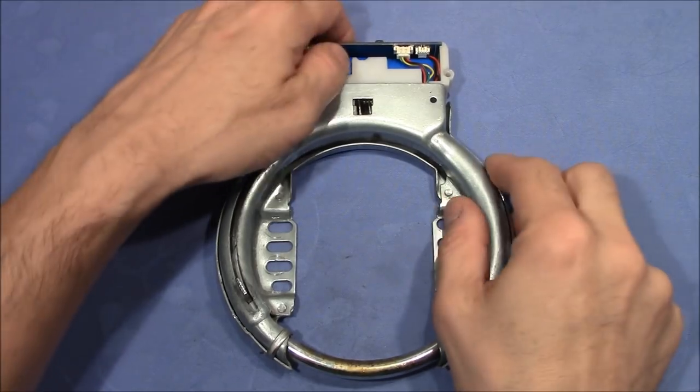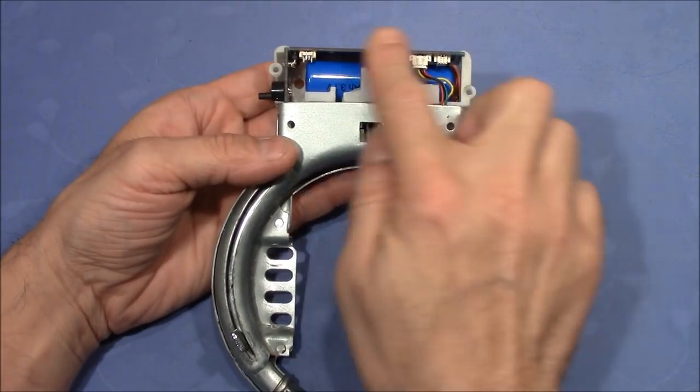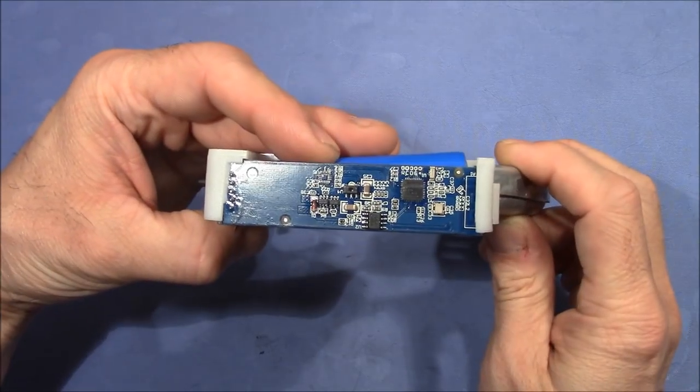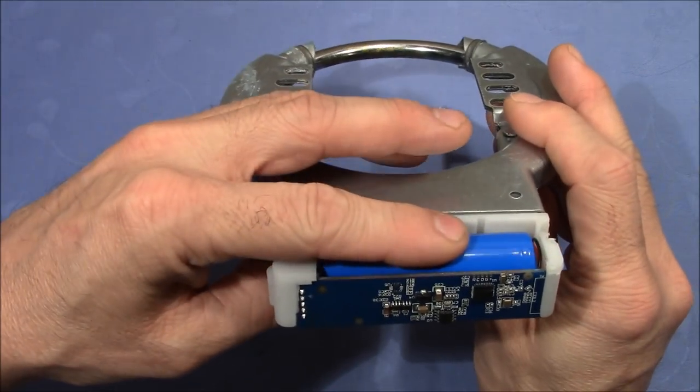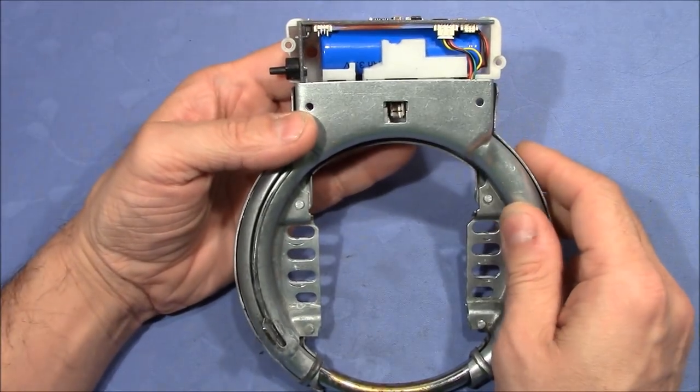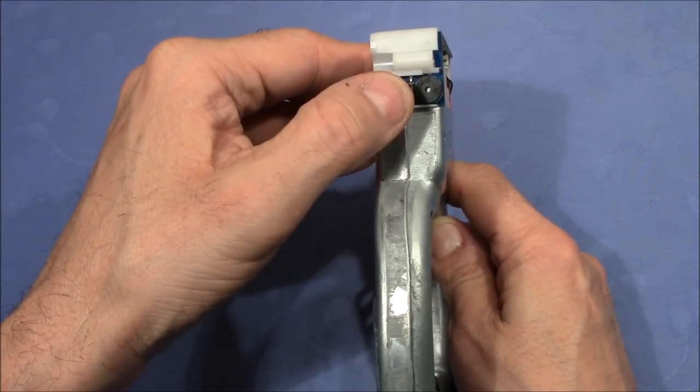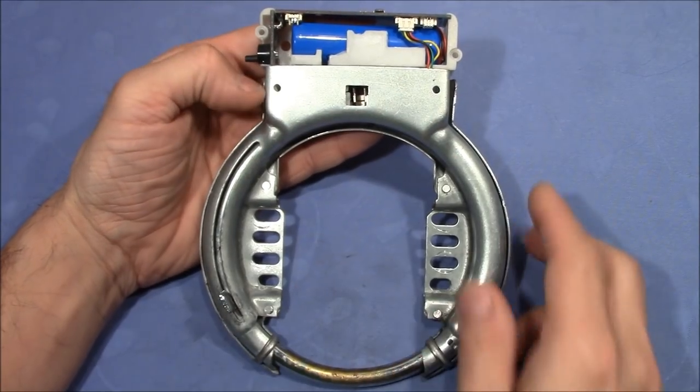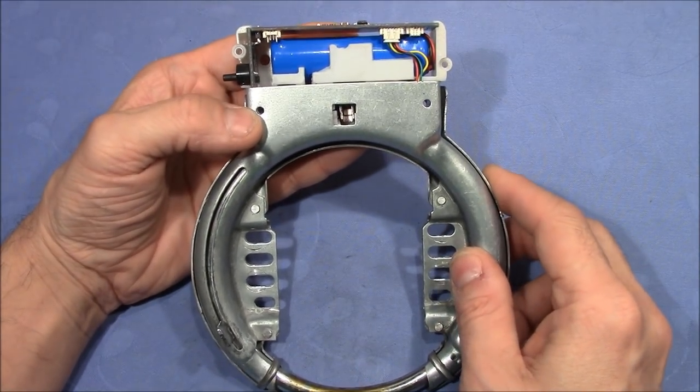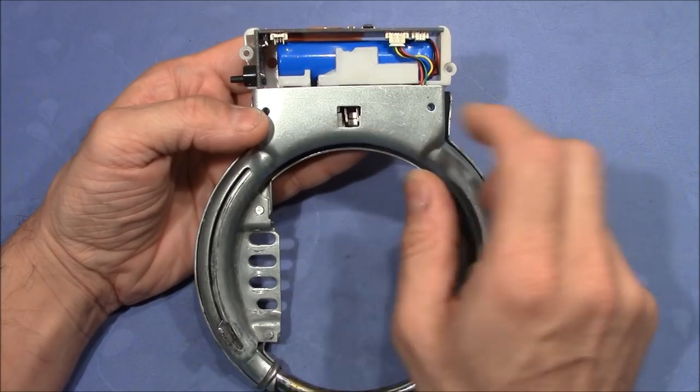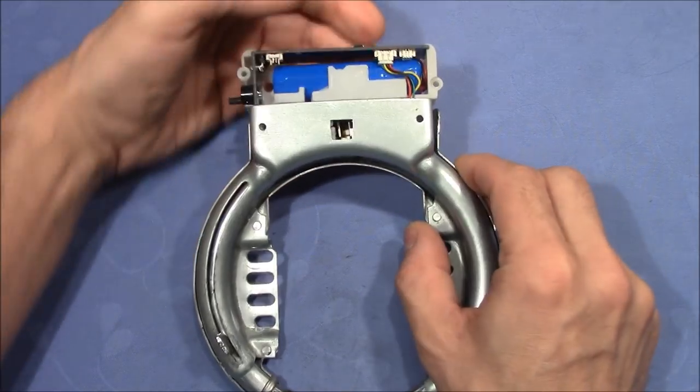So here is the lock itself without the housing. We can see the upper part is where the electronics is and here is also the battery that is charged by the solar panel. On the side we have the button and the little speaker. And the lower part is the mechanical lock. I think now it's time to lift the lever and get this lock unlocked.